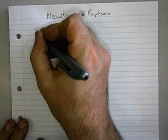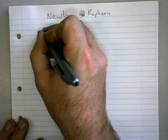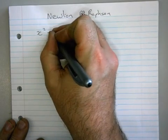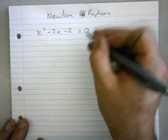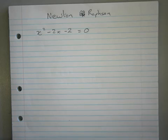What we're looking at now is the second of the numerical methods. We're going to try and find an answer to the question x squared minus 2x minus 2 equals 0. And in order to do that we're going to use the Newton-Raphson method.